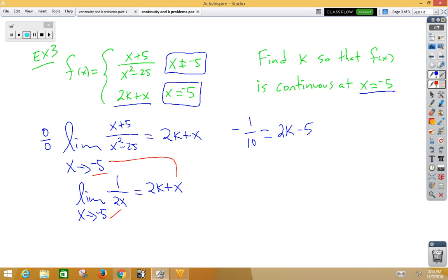Well, again, if you really don't like fractions, go ahead and kill off the fraction by multiplying the 10 to the other side. You get negative 1 is equal to 20k minus 50, so 20k is equal to 49, and k is 49 over 20.